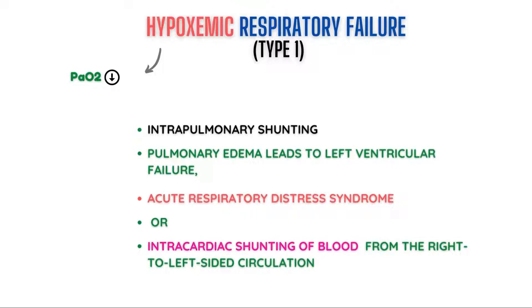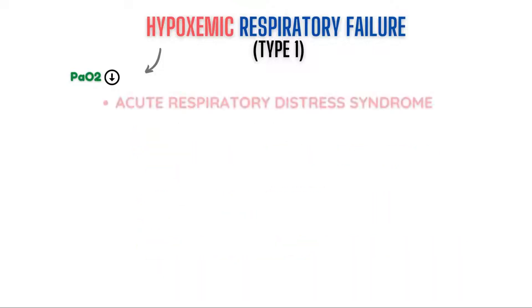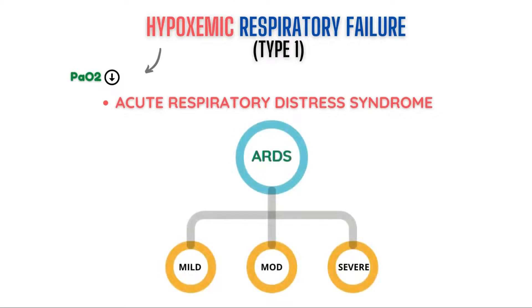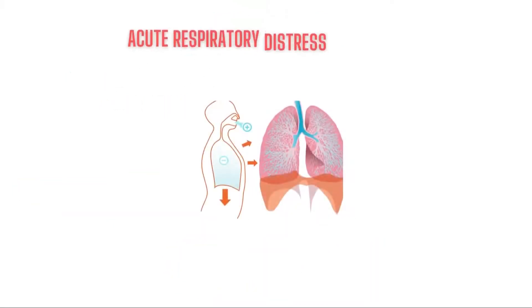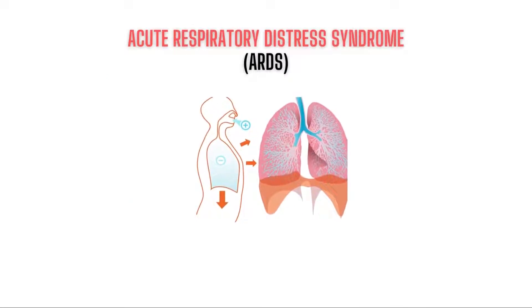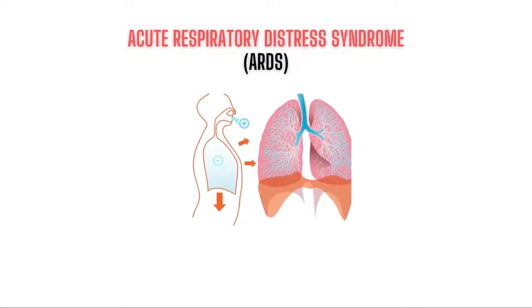Acute respiratory distress syndrome (ARDS) is one of the major causes of acute hypoxemic respiratory failure (AHRF), or Type 1 respiratory failure. ARDS is graded according to severity into three categories — mild, moderate, and severe — a classification called the Berlin definition of ARDS. Any direct or indirect injury to the lungs can cause acute respiratory distress syndrome.